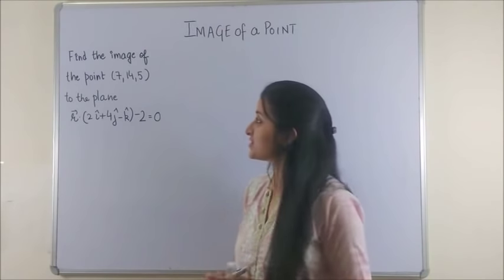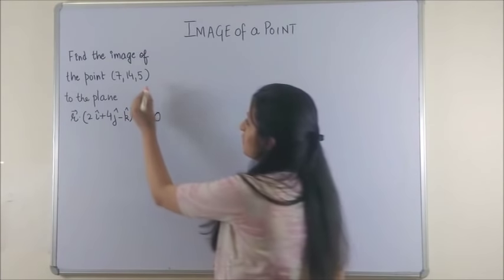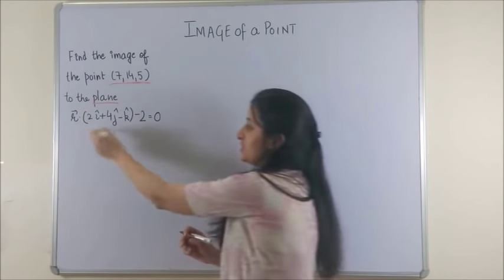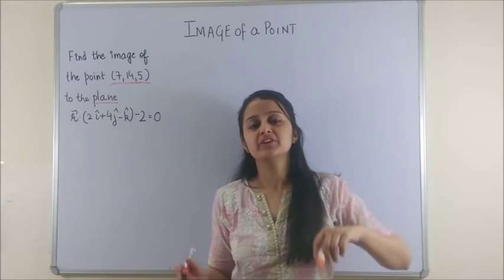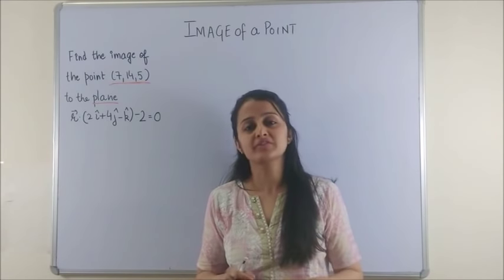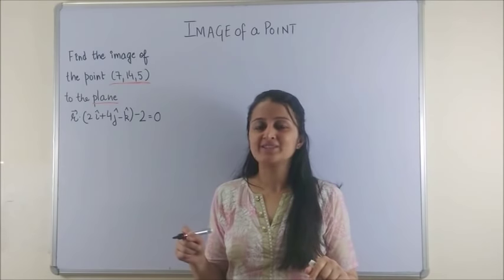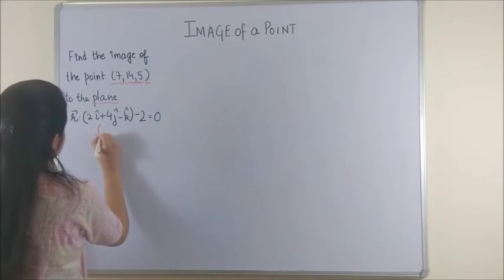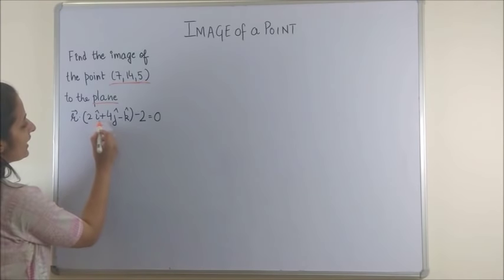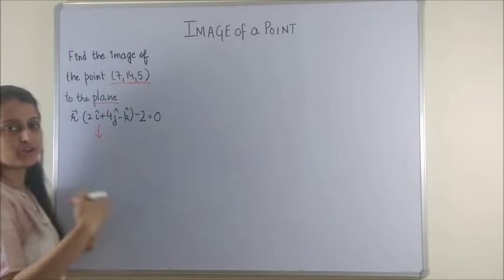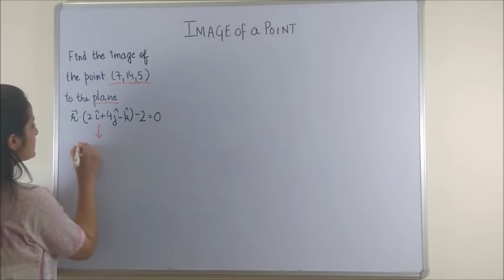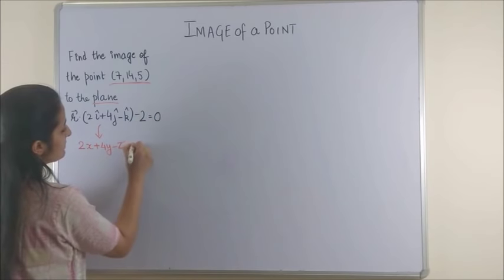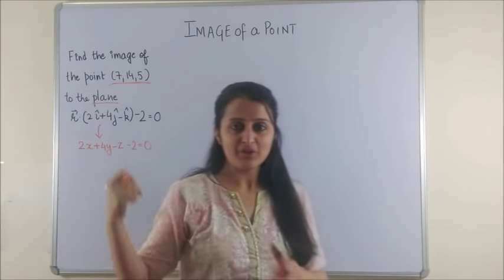Now please have a look at this question. It says find the image of the point (7, 14, 5) to the plane which is represented by this. Once again we convert this plane to the Cartesian form for convenience. You can check out my playlist on vectors and 3D geometry to find the same procedure. So this gets converted to, though it's very simple, you just remove i cap, j cap, k cap and instead put your x, y and z. So this becomes 2x + 4y - z and this is simply -2 is equal to 0. This is the equation of our plane.